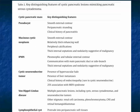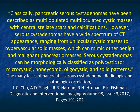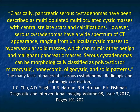We wrote an article with Linda Chu looking at the many appearances of serous cystadenomas - it's a good article to review. Charts show the age range of serous cystadenomas compared to MCNs, which tend to be younger, though there is overlap. Classically, pancreatic serous cystadenomas have been described as multilobulated, multiloculated cystic masses with central stellate scars and calcifications. However, serous cystadenomas have a wide spectrum on CT, ranging from multilocular masses to hypervascular masses, which can mimic other benign and malignant lesions - they're kind of a chameleon.